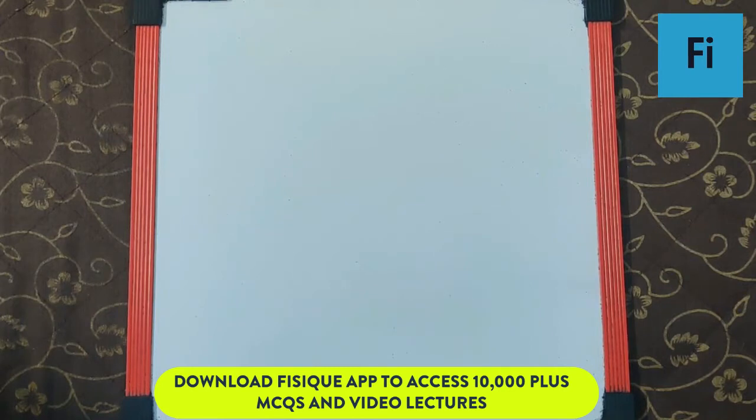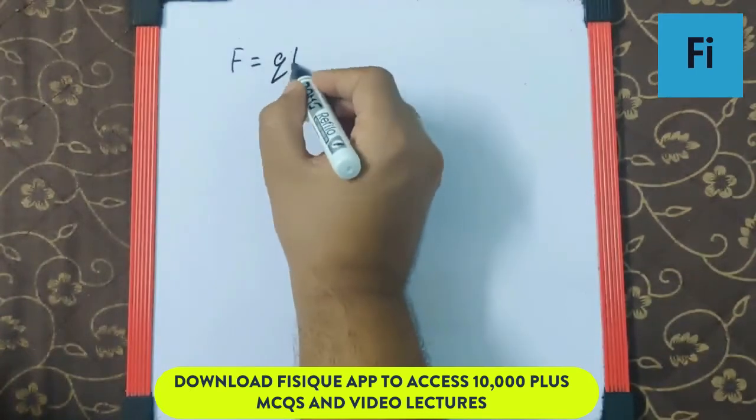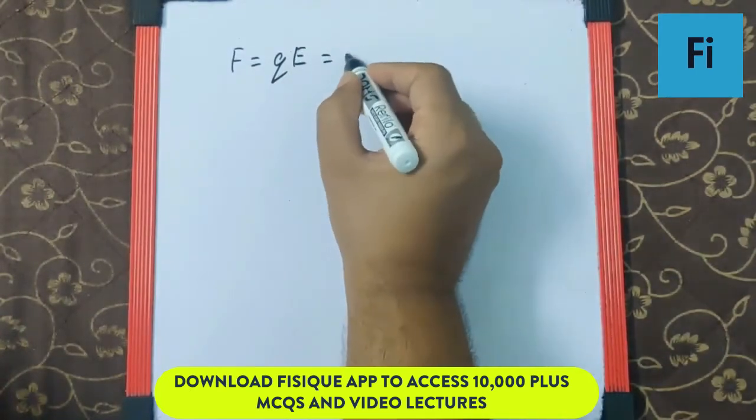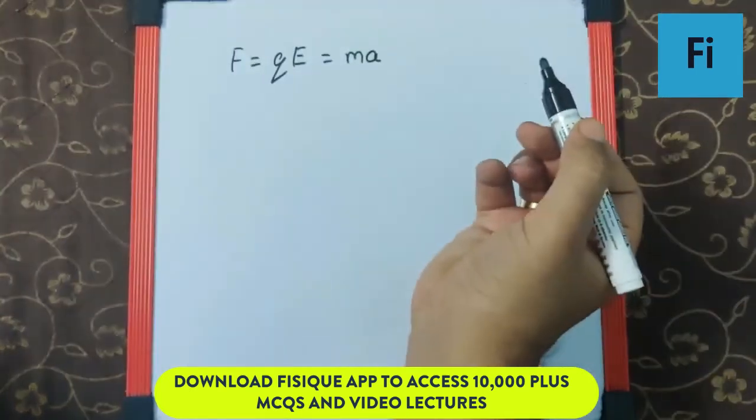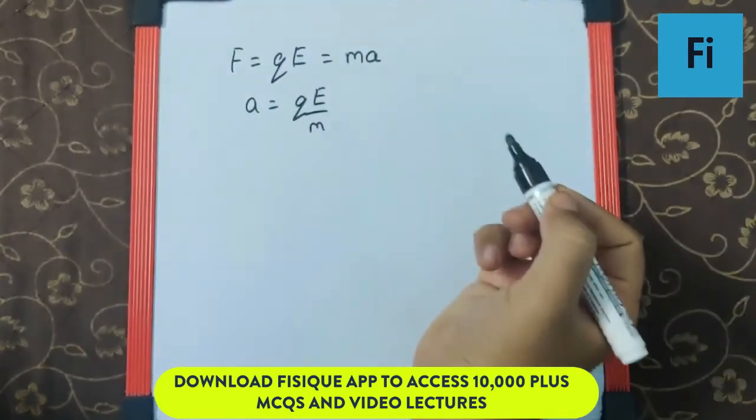Now evaluate the distance traveled by the electron before coming to rest for an instant. The force acting on the electron can be given as F = QE, which equals mass into acceleration. This means acceleration is QE by M.